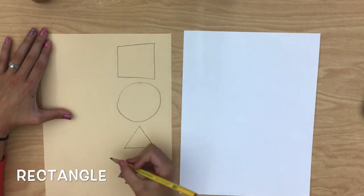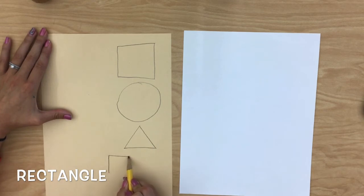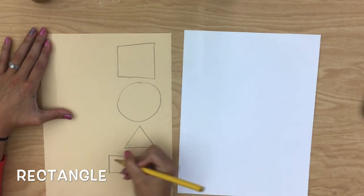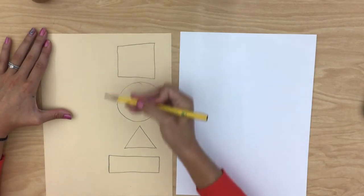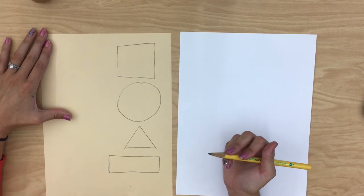The next is a triangle, the pointiest of them all. Your triangle has three sides and it looks like this. The last one we're going to draw is a rectangle. A rectangle is like a square but two of its sides are really long and two are really short. These two are short. Those are the four shapes that we're going to be using in our shape robot.